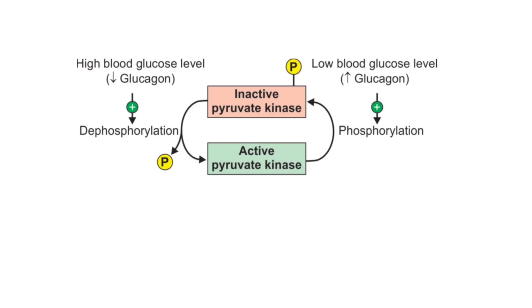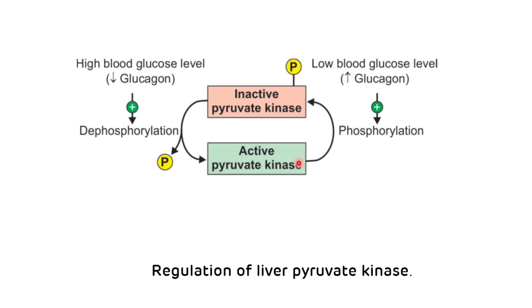Regarding regulation of liver pyruvate kinase: when blood glucose is high, glucagon is reduced, leading to dephosphorylation, which makes pyruvate kinase active. When blood glucose is low, glucagon is high, leading to phosphorylation via increased cyclic AMP-dependent protein kinase A, which inactivates pyruvate kinase.